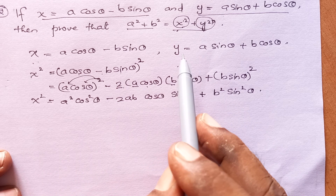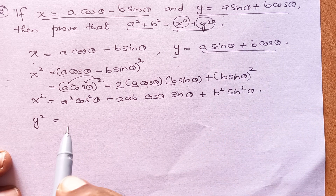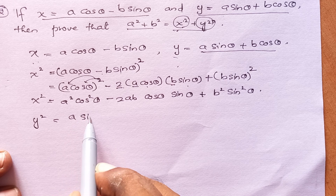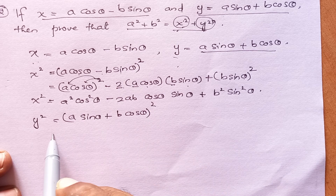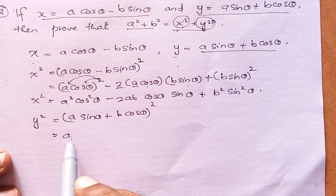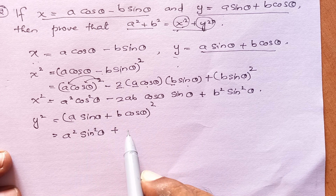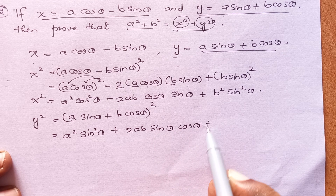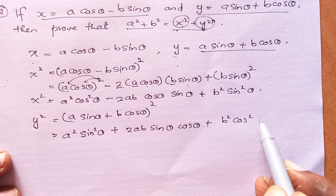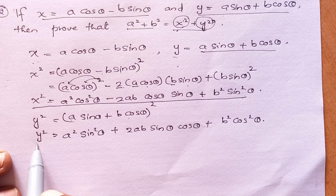In the similar way we can write y square. When you expand y square — that is a sin theta plus b cos theta, the whole square — doing the similar expansion we get: a square sin square theta plus 2ab sin theta cos theta plus b square cos square theta.